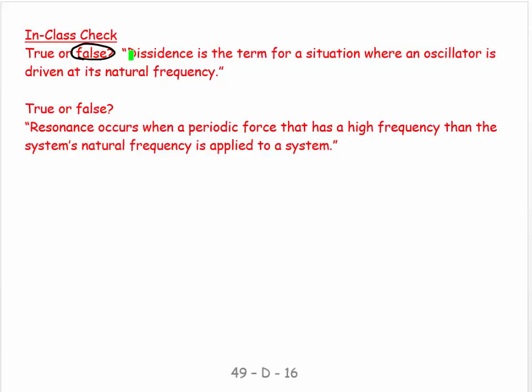True or false: 'Resonance occurs when a periodic force that has a higher frequency than the system's natural frequency is applied to the system.' That's also false. You can often tell when they're false because the English does not make sense. Resonance occurs when the periodic force has the same frequency as the system's natural frequency.